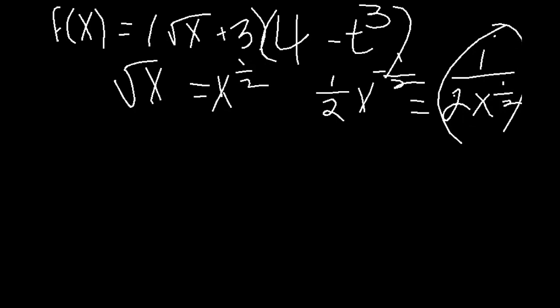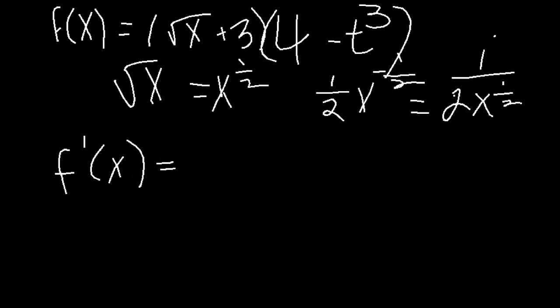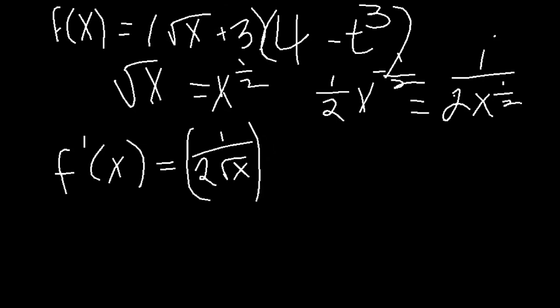This is the derivative of that part. So we can rewrite it and apply the product rule. The derivative of the square root of x is 1 over 2 root x. We know the derivative of a constant is always 0, so we don't need to worry about that. This is the derivative of this part, so we don't have to do the derivative again here — we can just leave that alone.